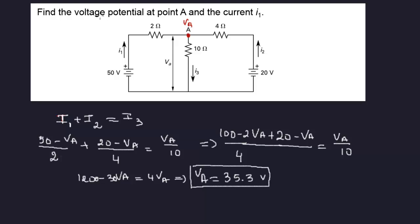Now we have to find I1. So what was I1? I1 was 50 minus VA over 2. So I1 is 50 minus VA 35.3 over 2. Simple. Right. So minus 50 over 2. 735. So I1 is 7.35A amps.